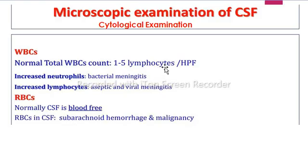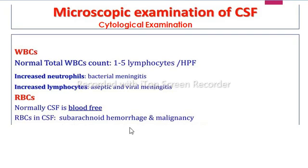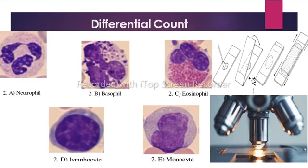For microscopic examination of CSF, normal CSF has 1 to 5 lymphocytes per high power field. CSF may contain WBCs in varying amounts in some diseases — neutrophilia indicates bacterial meningitis, and lymphocytosis indicates viral or aseptic meningitis. CSF is normally blood-free, but RBCs may be present due to malignancy or subarachnoid hemorrhage, or from the spinal tap during collection, which is not pathological. For differential count, the slide or smear is stained with Leishman, Giemsa, or field stain, then observed under oil immersion lens.